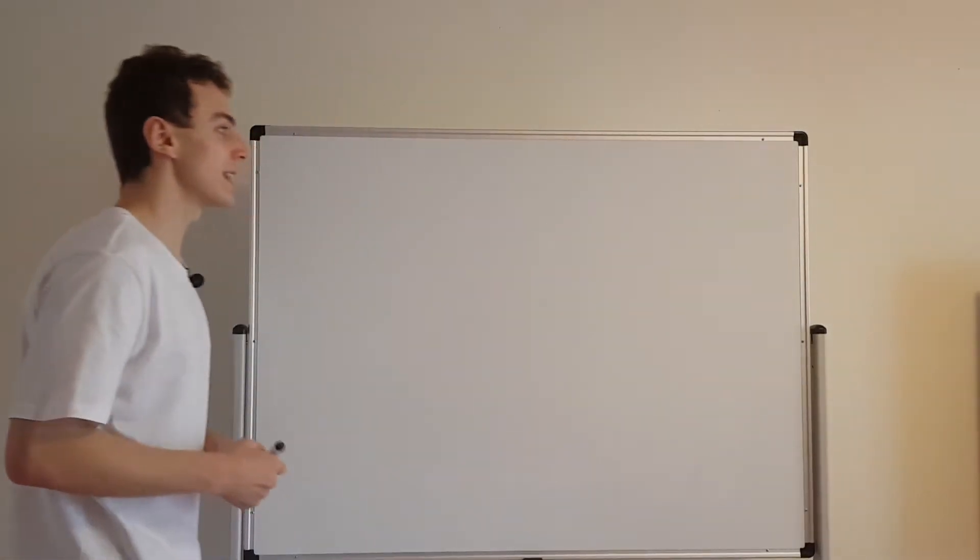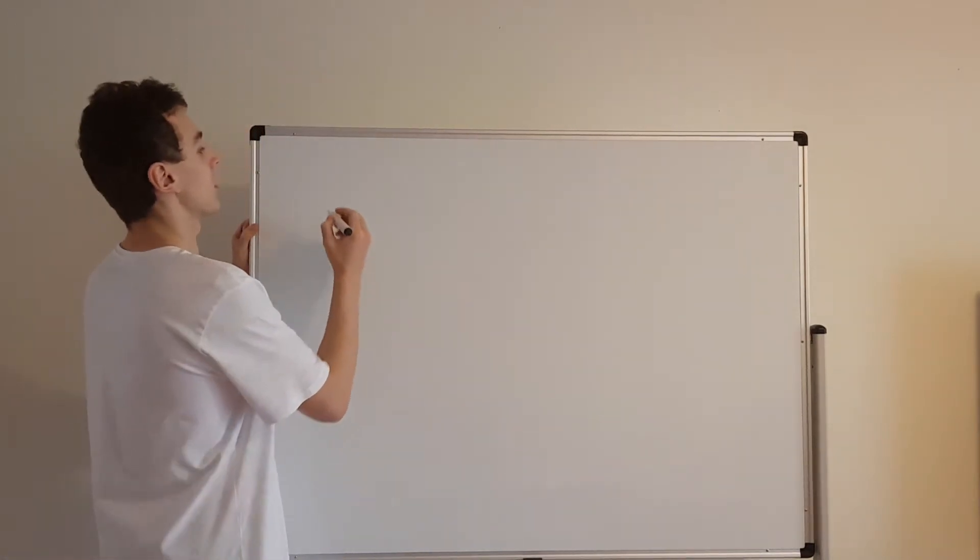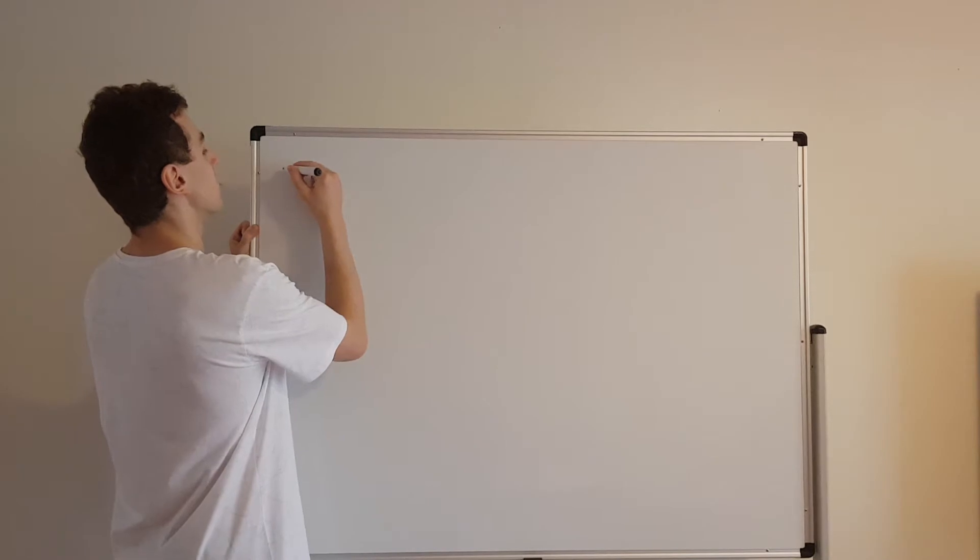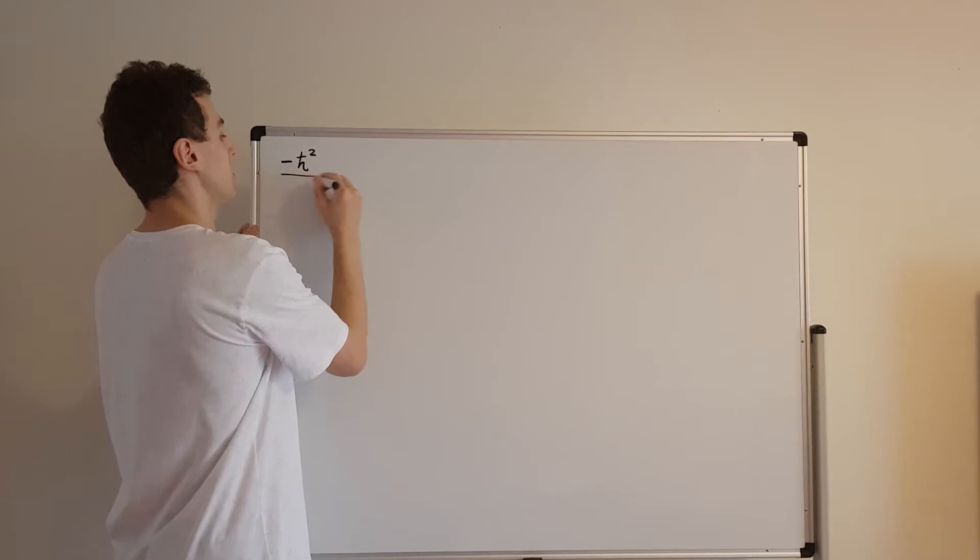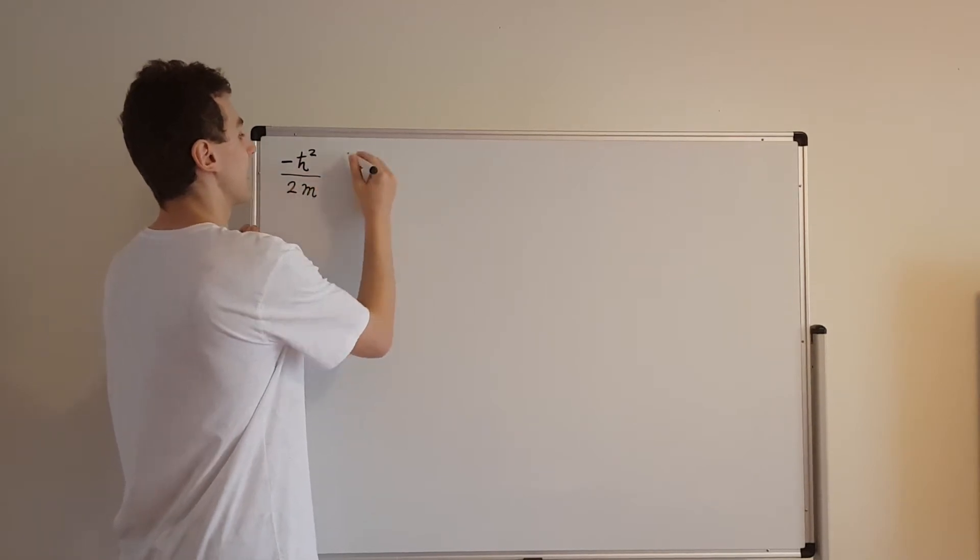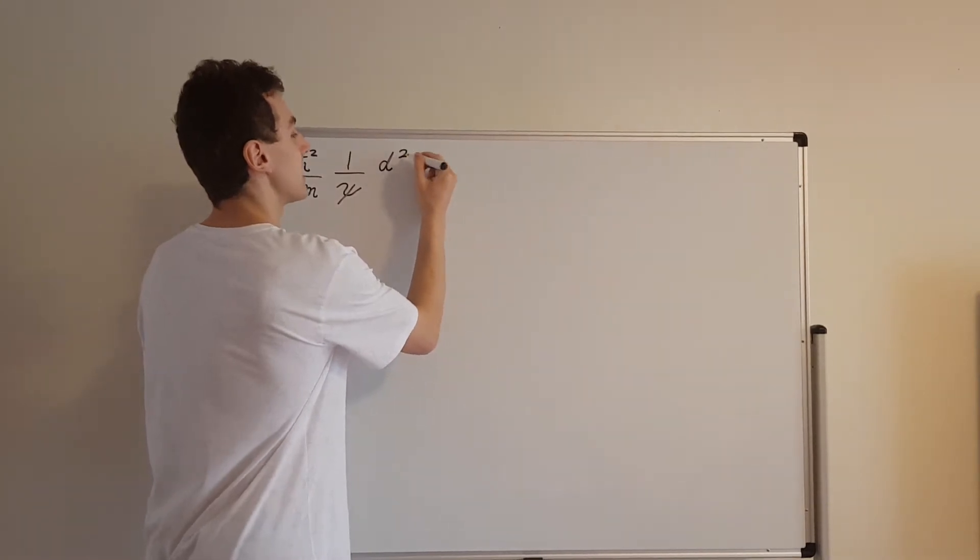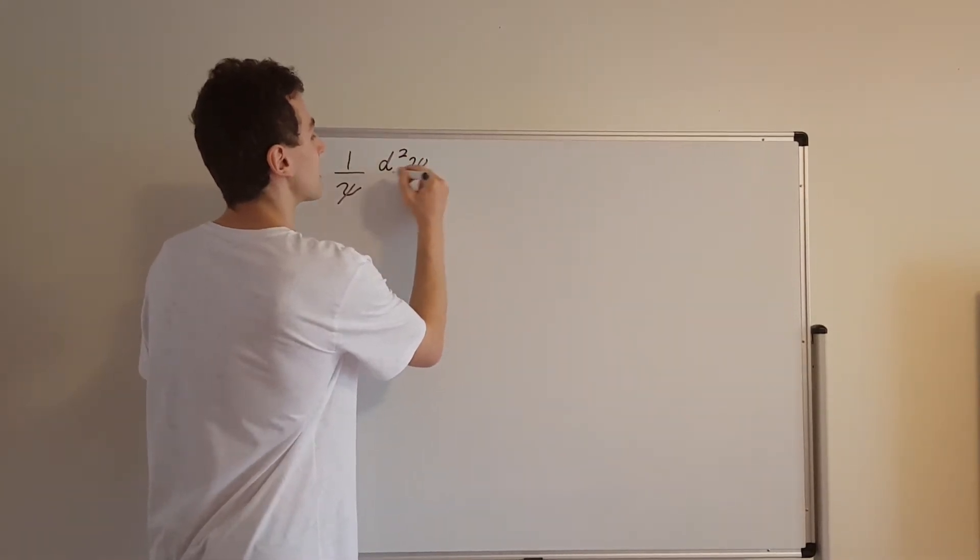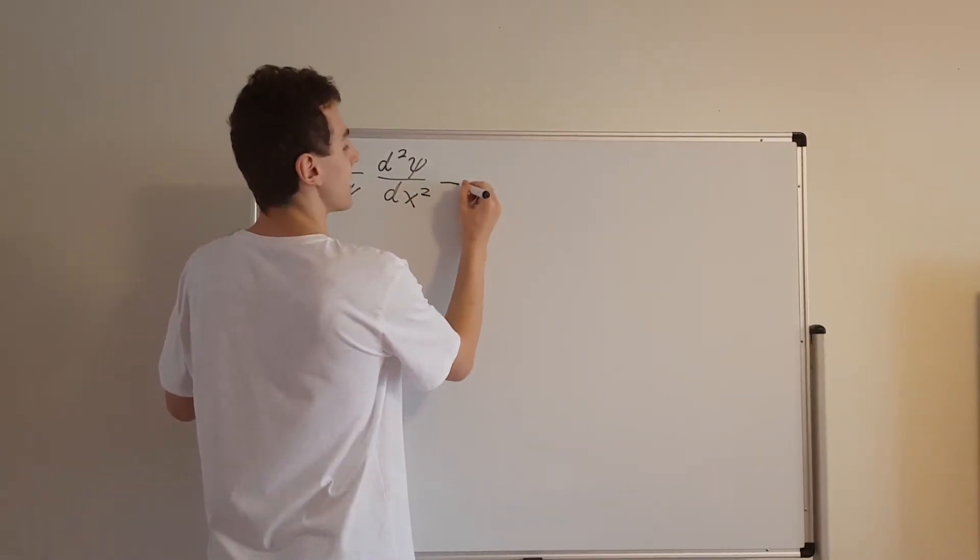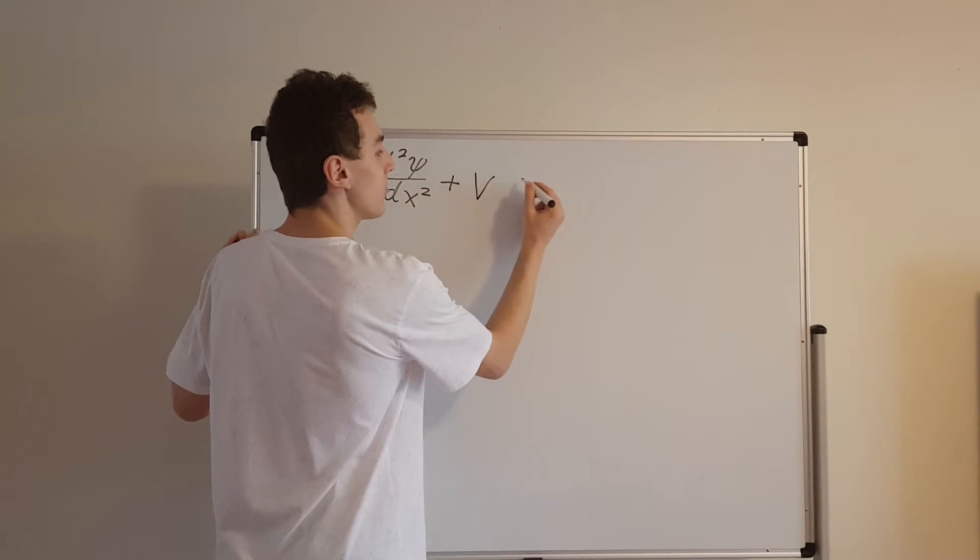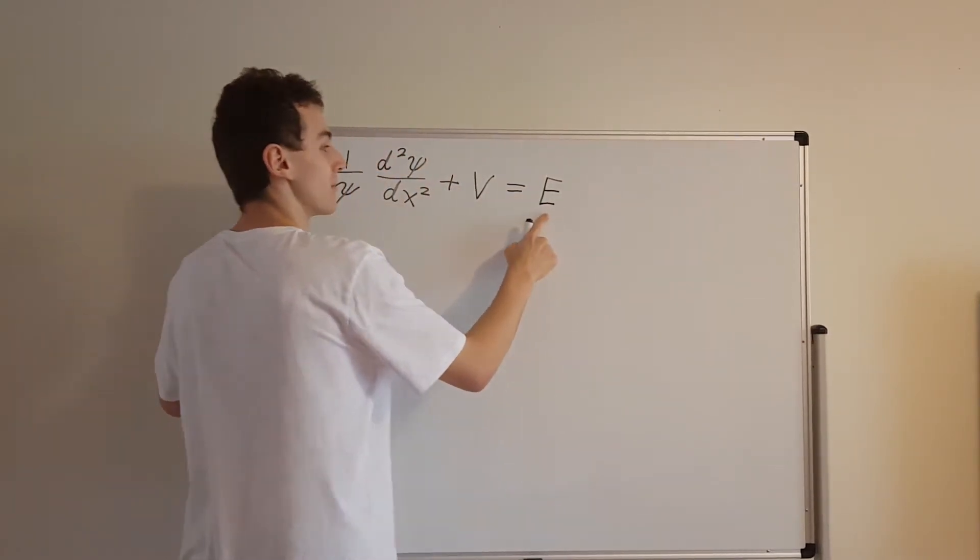So let's have a look at what we got at the end of the method of separation of variables. We got this expression over here. We had minus h bar squared over 2m, then we had 1 over little psi, and we also had a second derivative of psi with respect to x. And we had to add to that V, and that was all equal to this constant E.